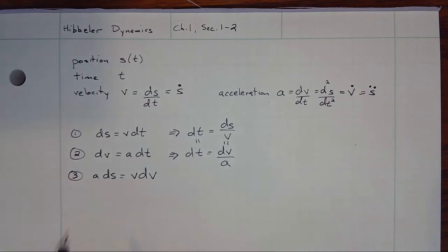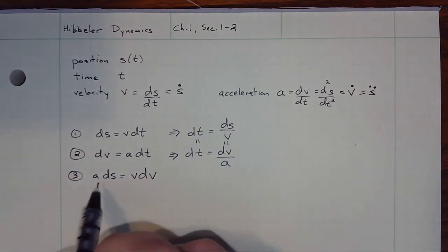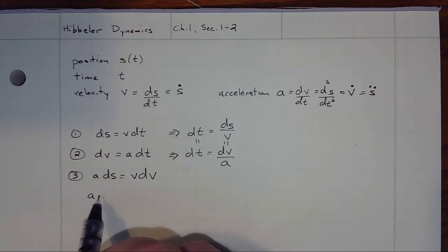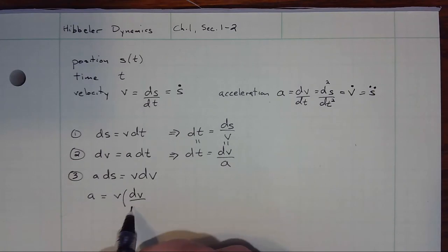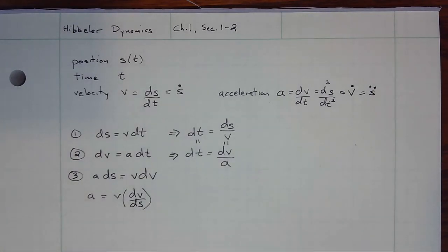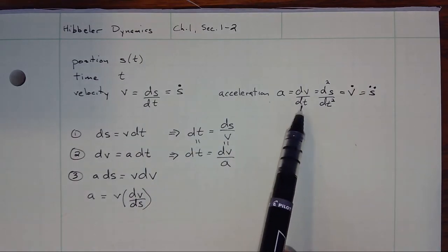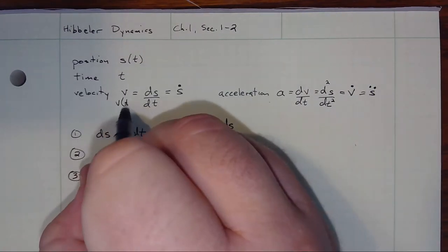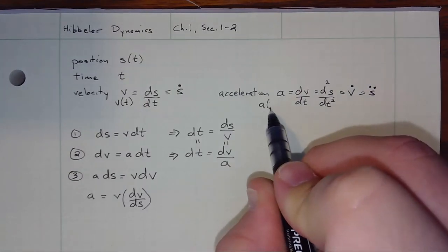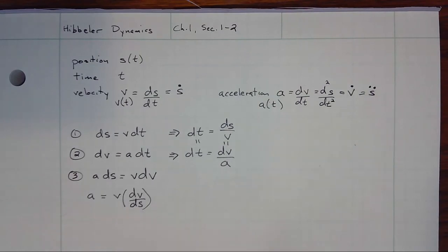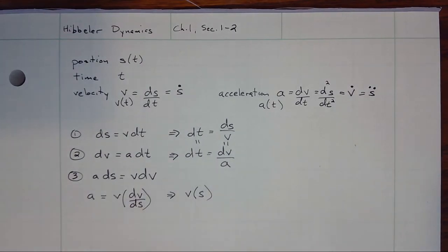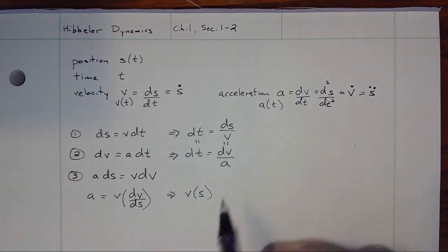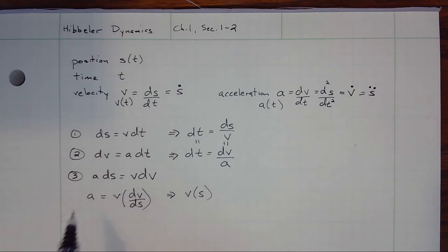Turning this back into a regular derivative, one of the things we can do by rearranging those terms is to say that acceleration a is equal to velocity multiplied by dv/ds. We have to be very careful: up above I had dv/dt, here I have dv/ds. When we had position as a function of time, we were talking about velocity and acceleration as functions of time. But here, we've implicitly implied that we are talking about velocity as a function of position, and similarly that we can talk about acceleration as a function of position.